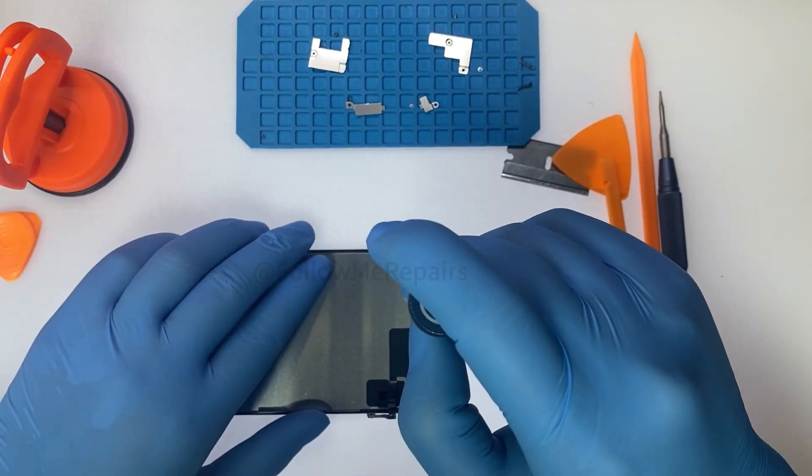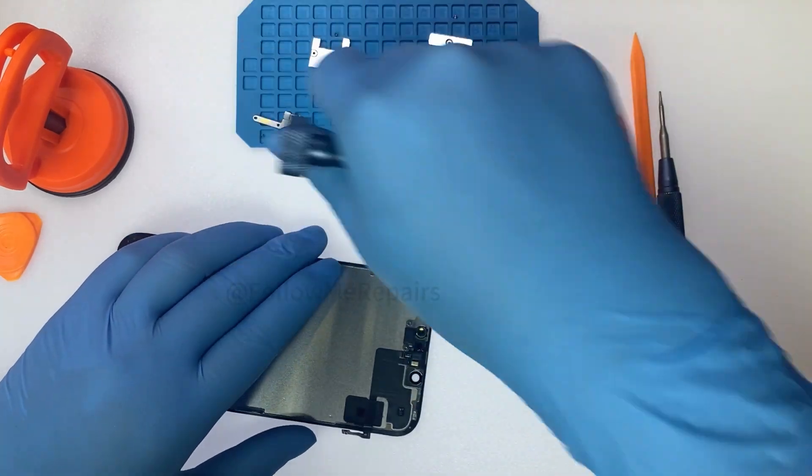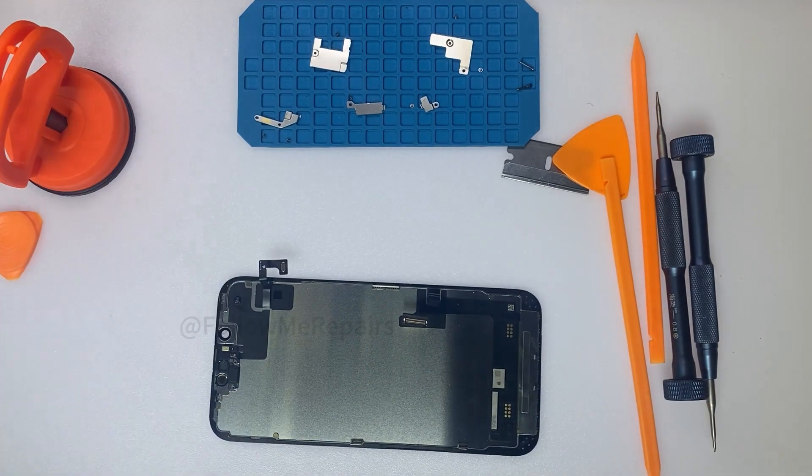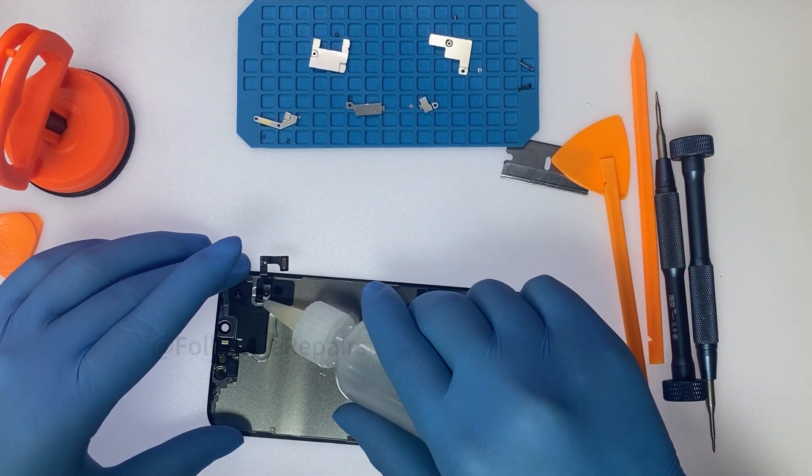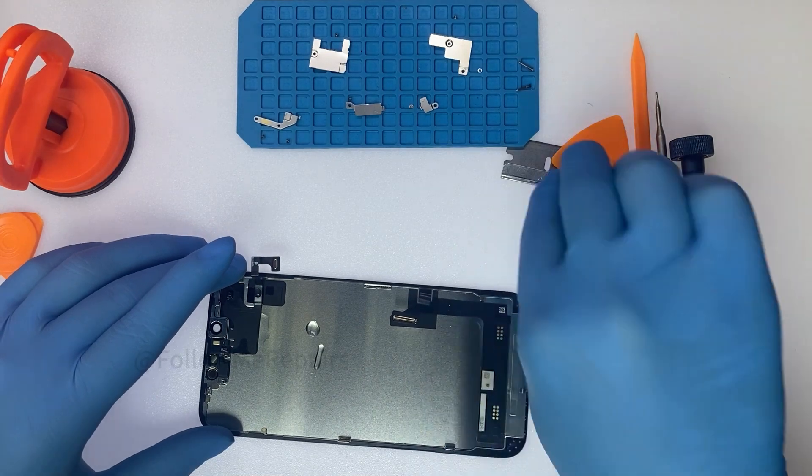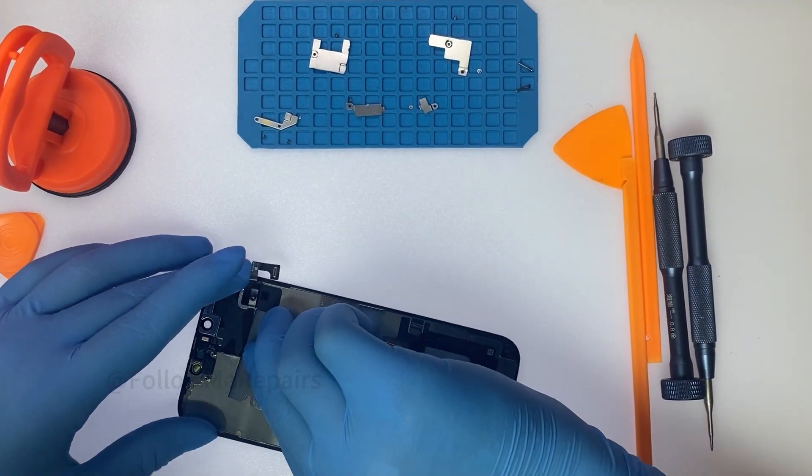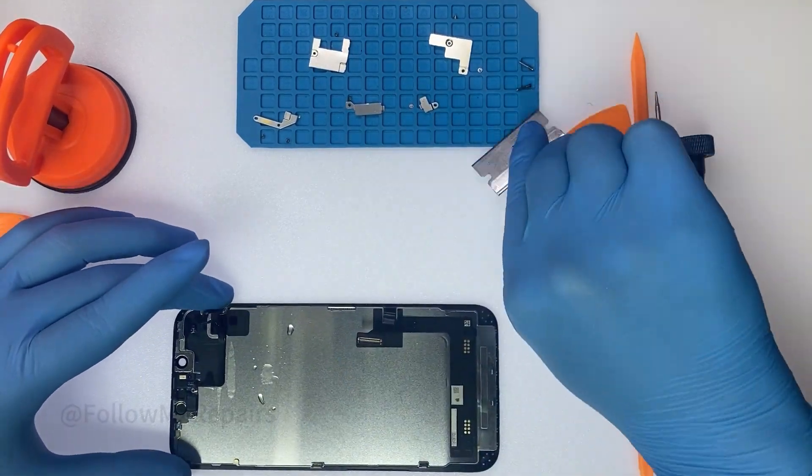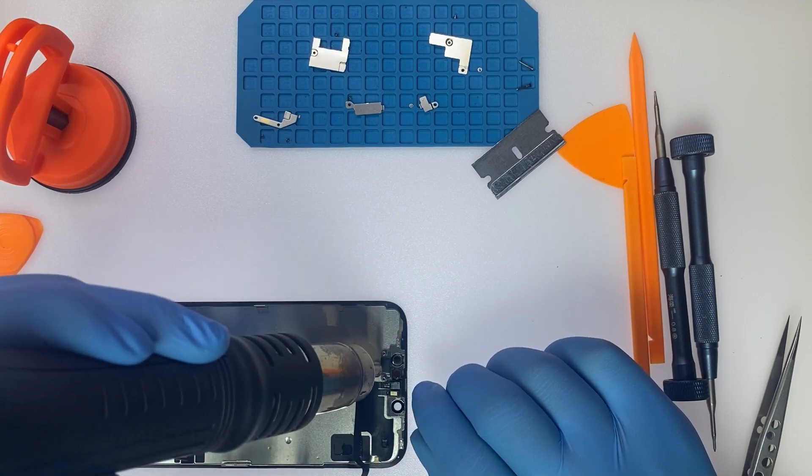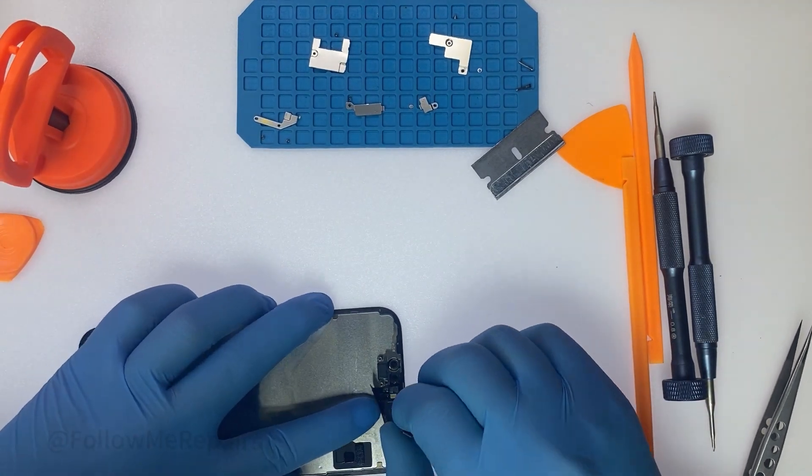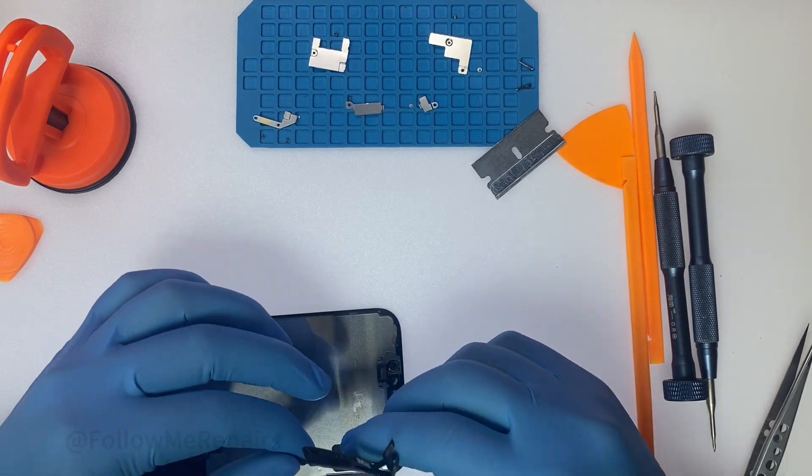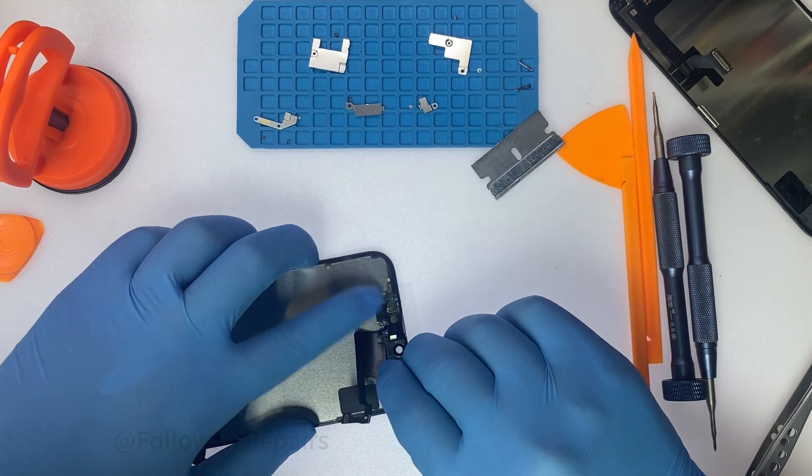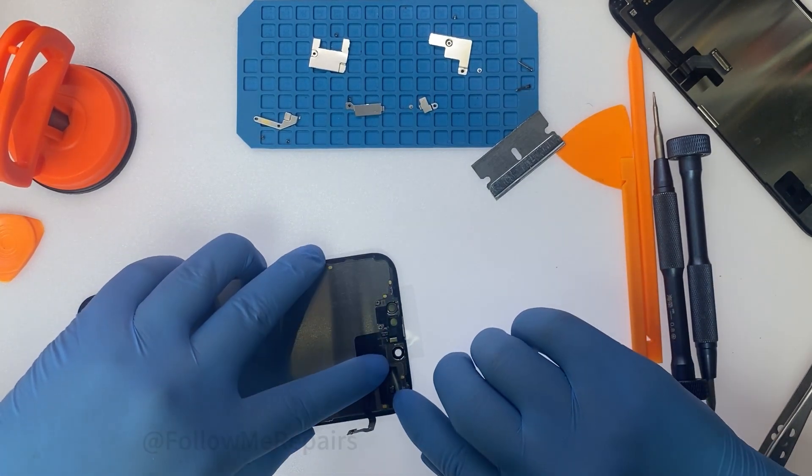Remove the flexible circuit board from the old screen. Install the removed flexible circuit board onto the new screen.